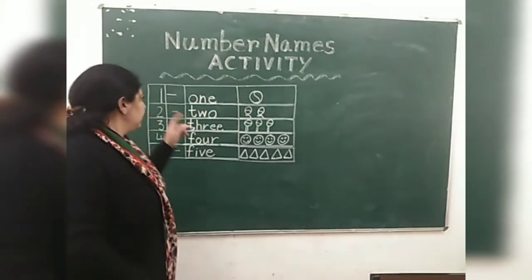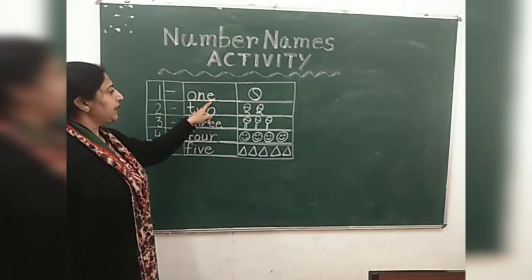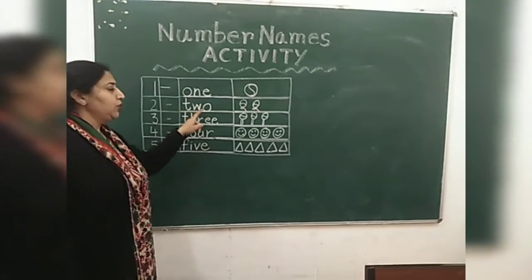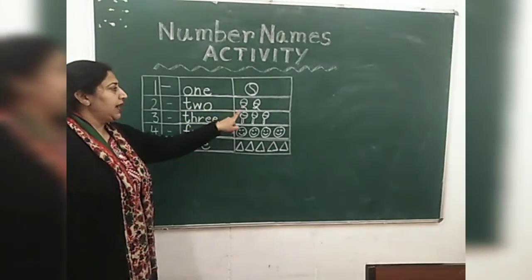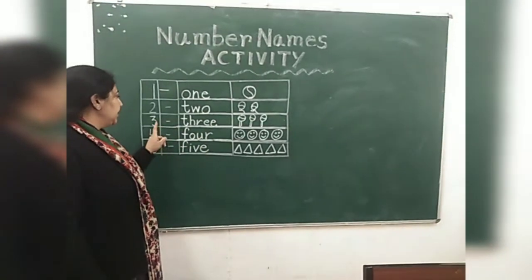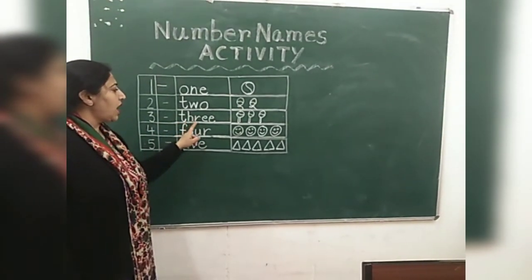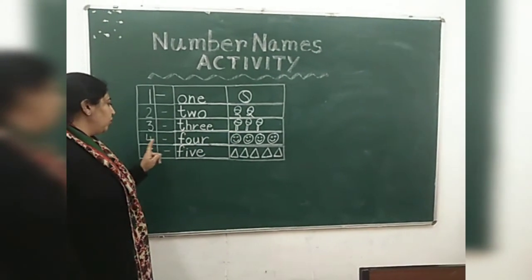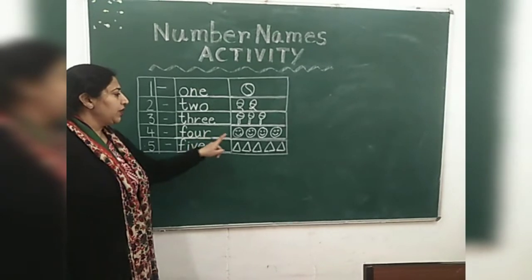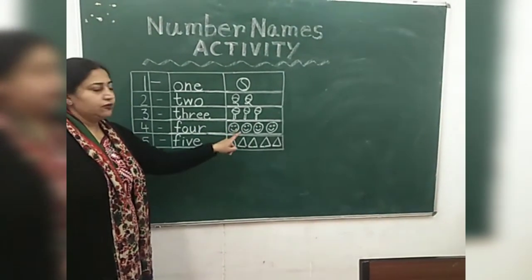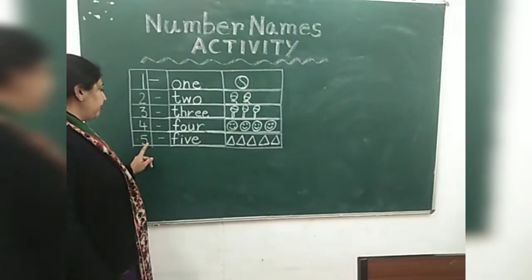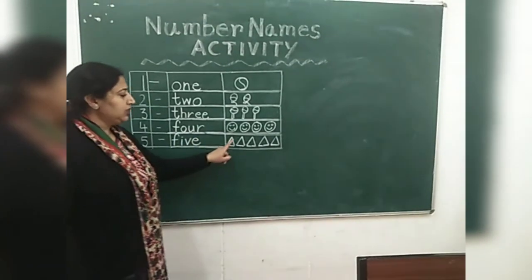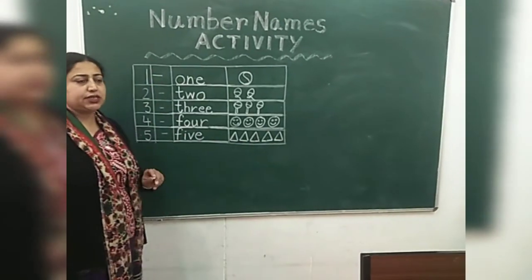Let's repeat. One, one, and one ball. Two, T-W-O, two. And I have drawn two objects. Three, T-H-R-E-E, three. Four, F-O-U-R, four. And I have drawn four smileys. Five, F-I-V-E, five. One, two, three, four, five. Five objects.